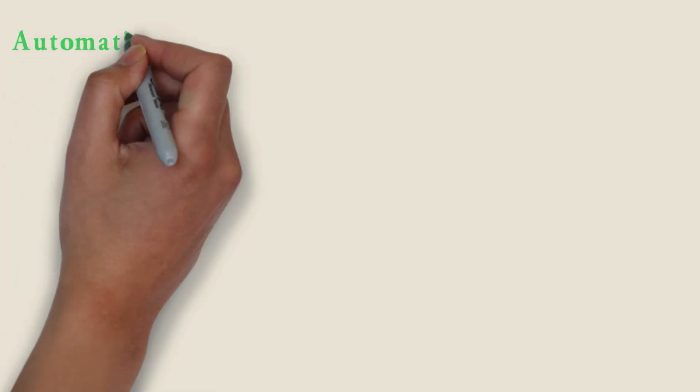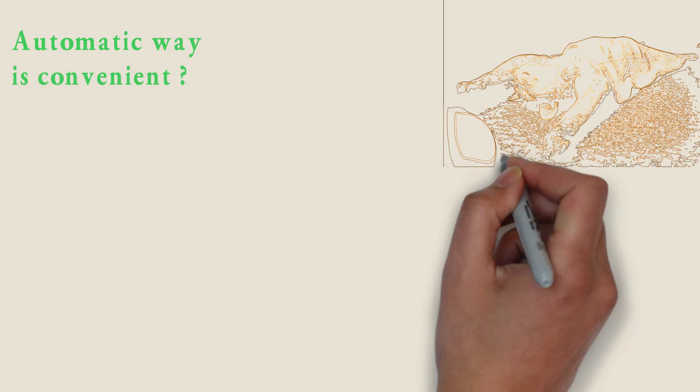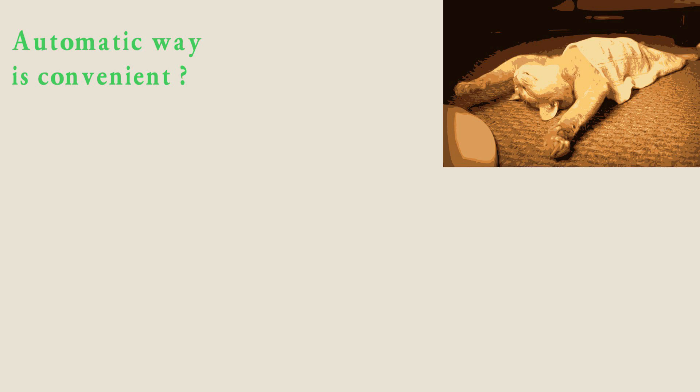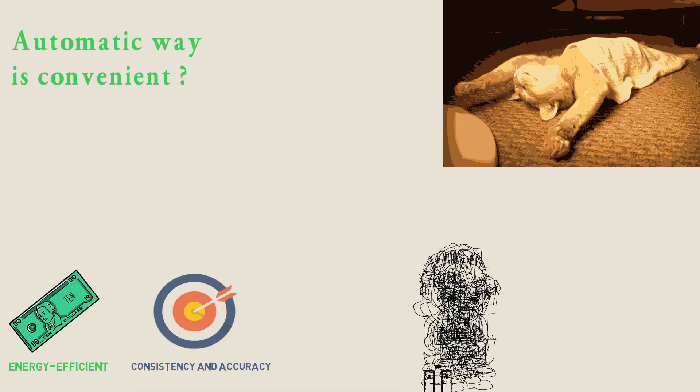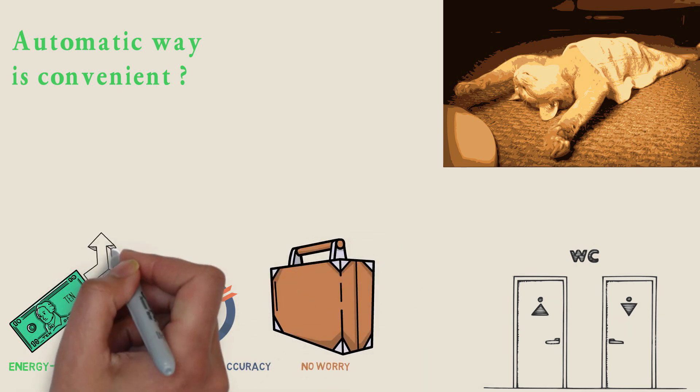Obviously the automatic way is more convenient for you, because here you don't need to press anything to turn on and off the pump. The automatic way is also more energy efficient with high consistency and accuracy. So when the worker goes to the bathroom or somewhere else, there is no worry about our business.